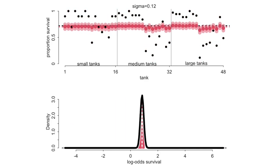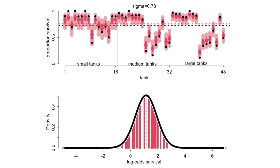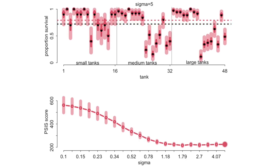Let's use cross-validation. Which of these sigmas gives us a good cross-validation score? We take this whole sequence and compute the PSIS — the Pareto smooth importance sampling cross-validation estimate — for each sigma. I've replaced the plot of the prior distribution of alphas with all the sigma values we're going to vary over, on a log scale, all the way from 0.1 to 5. At sigma 0.1, the PSIS score is somewhere above 500 — and remember, lower scores are better.